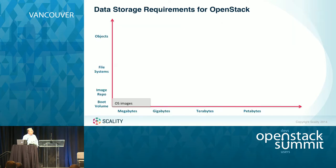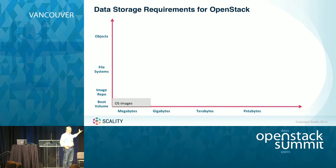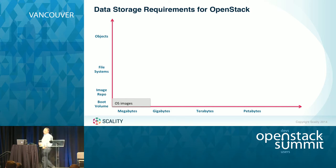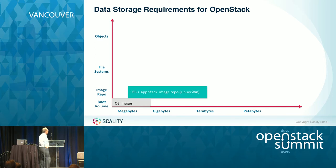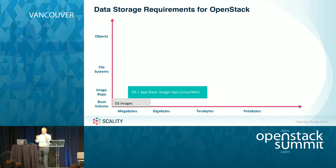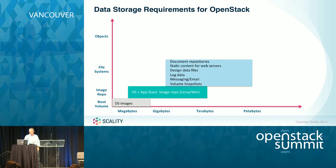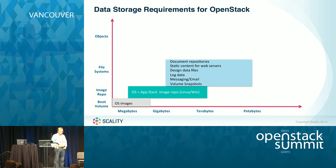To paint the picture about the various capacities: boot images and boot volumes are typically pretty small, measured in megabytes to gigabytes. However, your library of images — your repository — can grow into terabytes, even tens of terabytes. Where you start getting more interesting capacities into the terabytes and petabytes is when you start thinking about file systems: classic document repositories, content for web servers, design data and design files, logging data, and even unified messaging data.